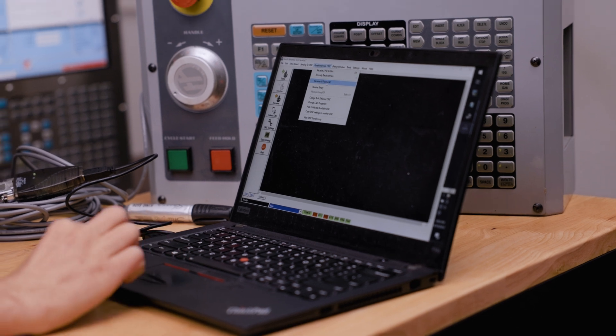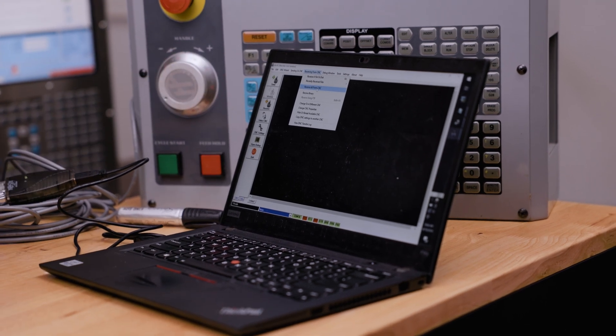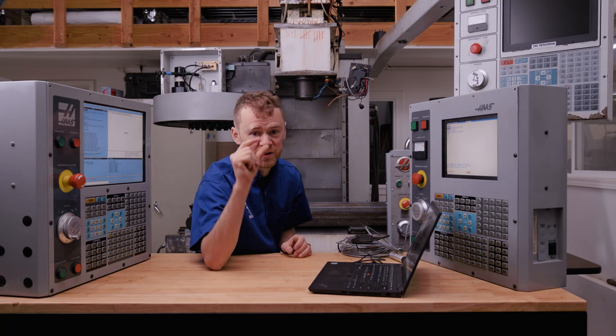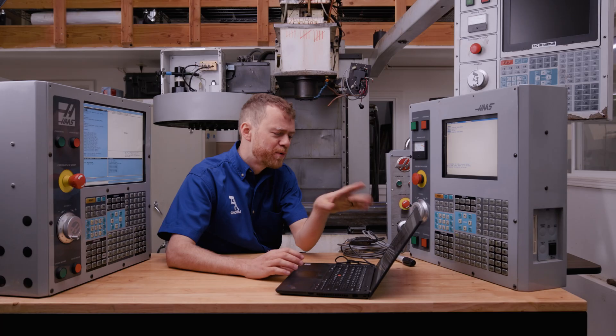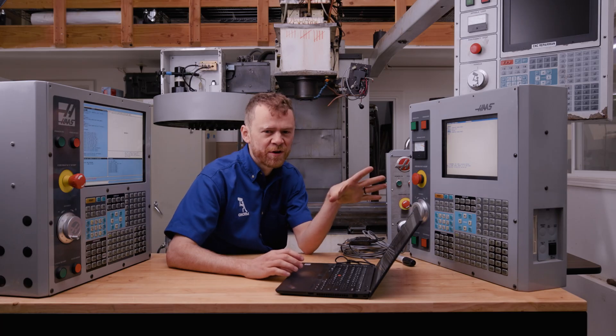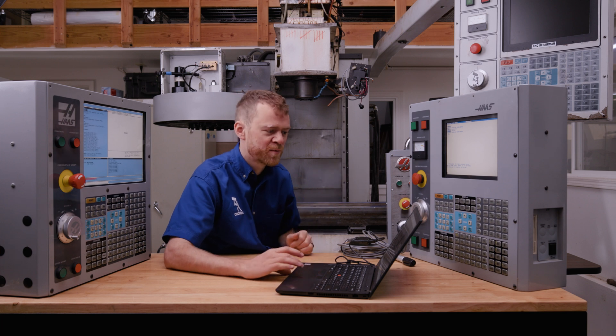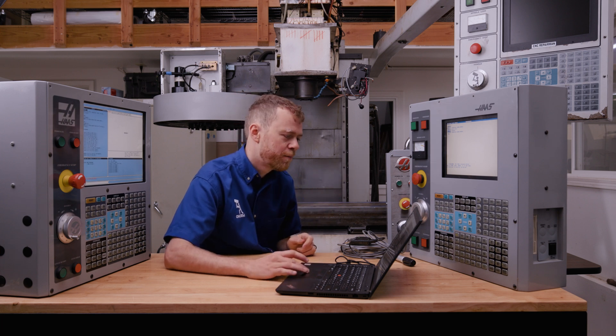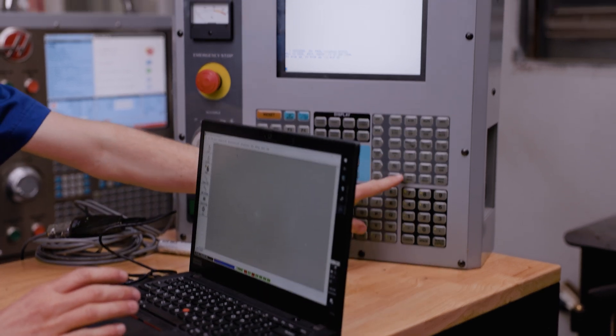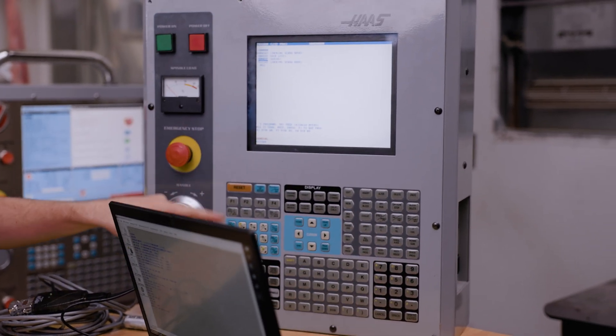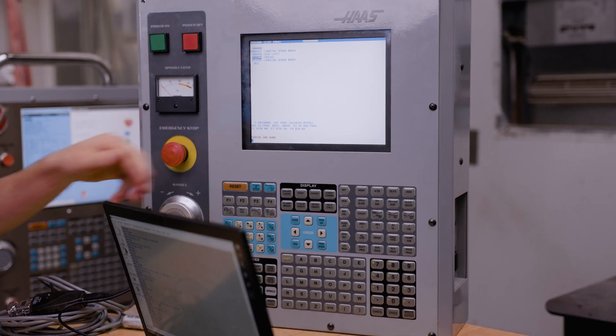Let's go ahead and put this at receive all from CNC instead of just receive a certain program. Now it's just gonna be waiting for the data. When you put this software, whatever software you have to receive or transmit, into receive mode, put it into receive all from CNC, come to your CNC, hit the send RS-232 button, and it'll tell you what program it's sending.